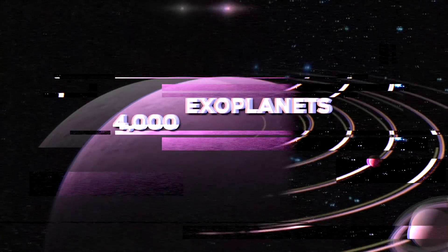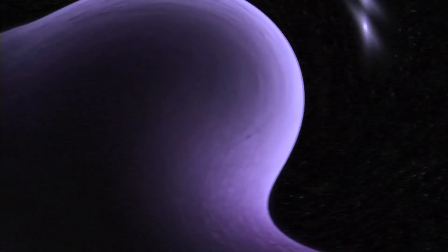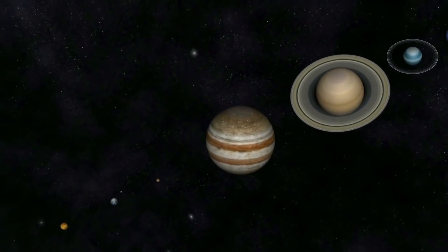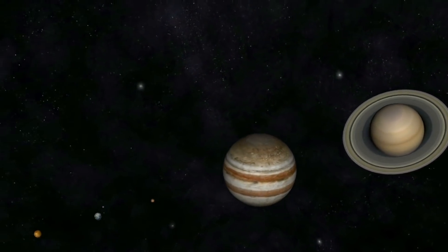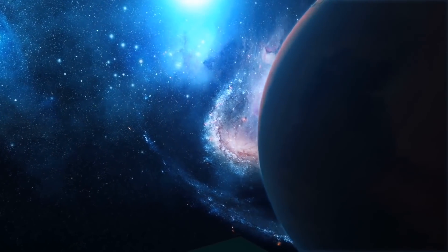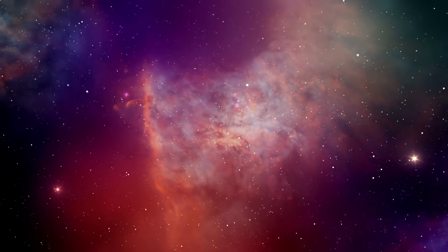In fact, over 4,000 exoplanets have been discovered, and scientists believe that most stars have their own solar systems. Some exoplanets seem strikingly like imaginary worlds we've envisioned, while others are far more unique than anything we could have imagined.